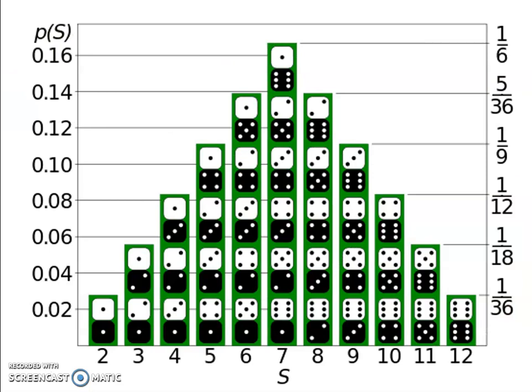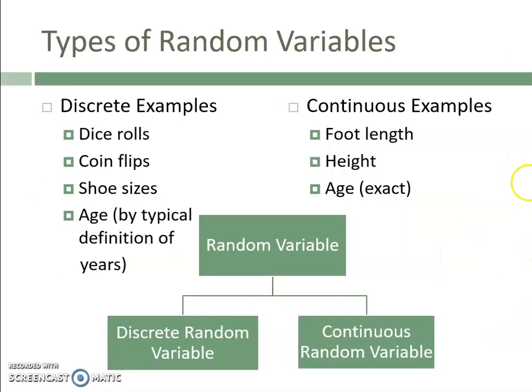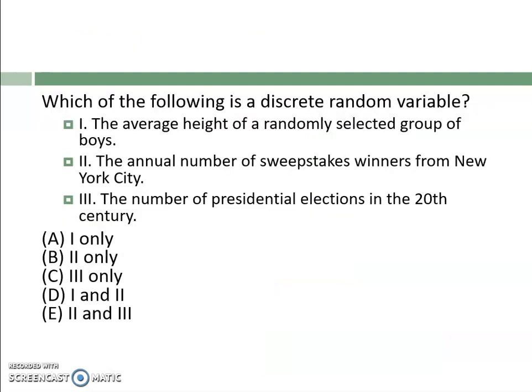Here's an example of what a probability distribution could look like when you roll two dice and take the sum. There are two types: discrete and continuous. Discrete examples include dice rolls, coin flips, shoe sizes, and age (by years). Continuous examples are things that have to be measured, like foot length or height. A quick question: which of the following is discrete? The only discrete ones are the annual number of sweepstake winners and the number of presidential elections — so the answer is E.